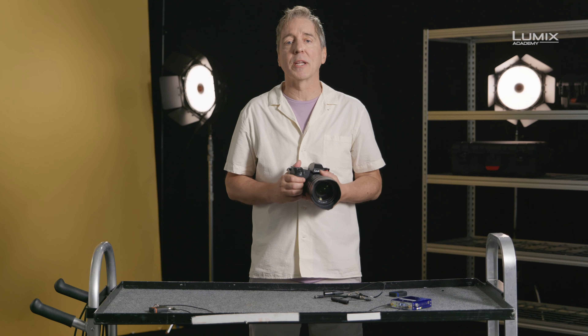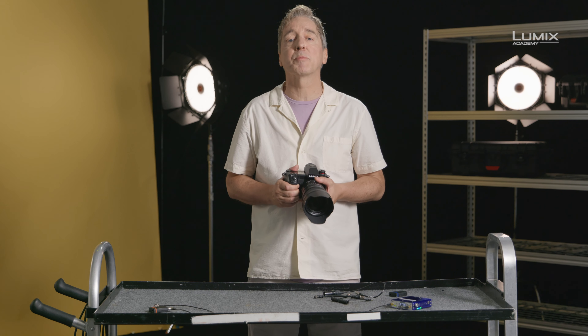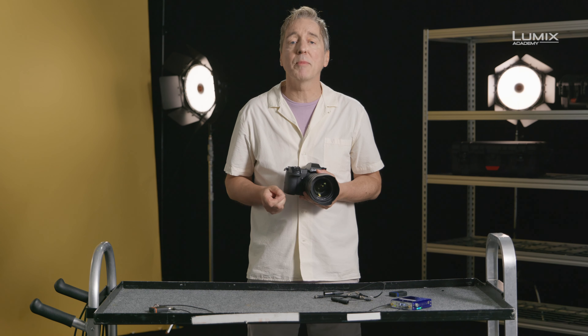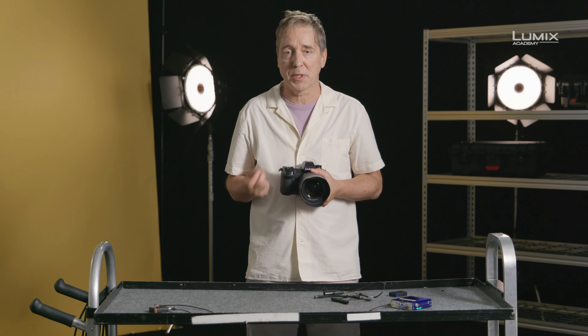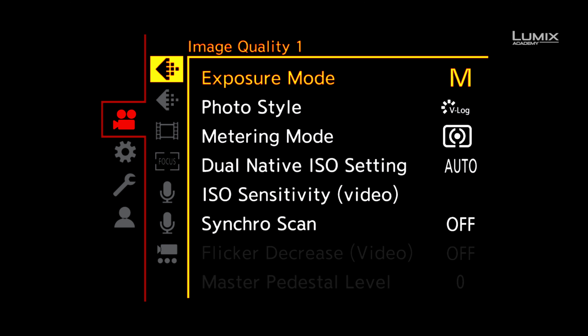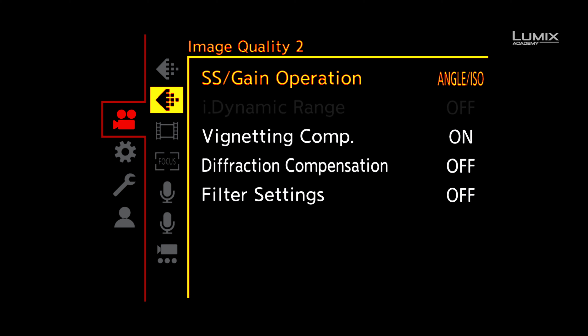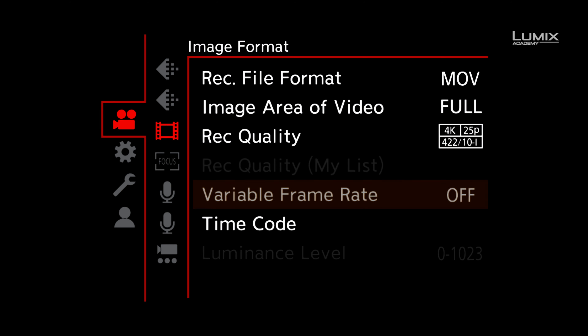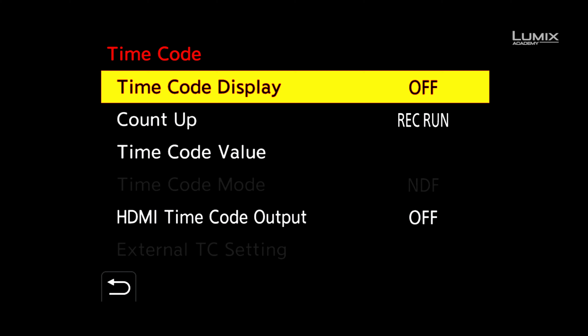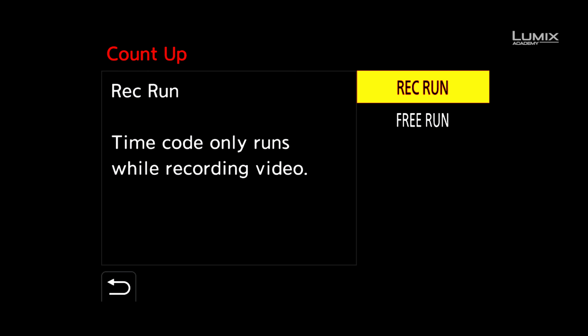For example, if you're recording 25 frames per second, make sure your timecode frame rate is also set to 25 frames per second. Diving into the timecode menu options on the S1H, we can see there are a number of menu items. The first option allows you to display the timecode on the monitor. The second option gives you the choice of free run or rec run.